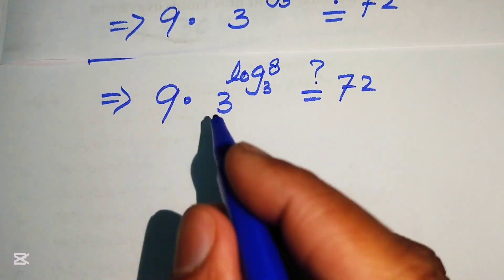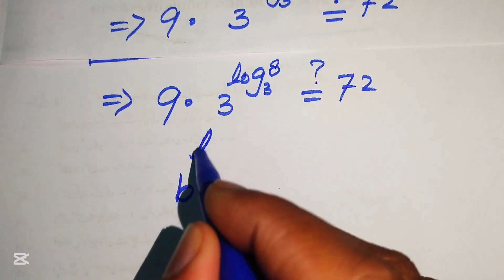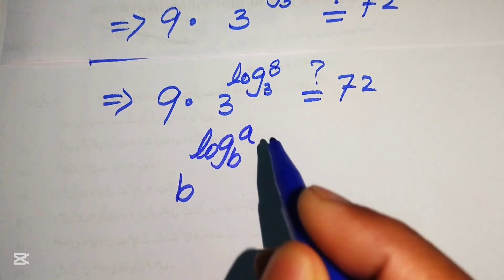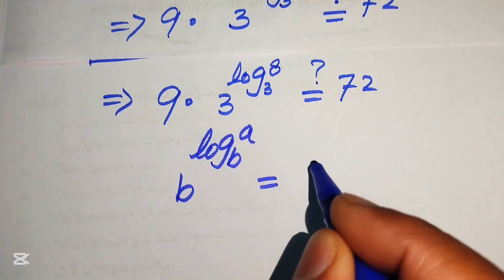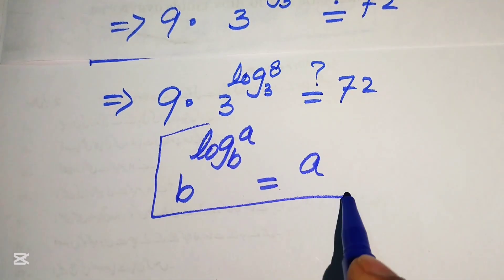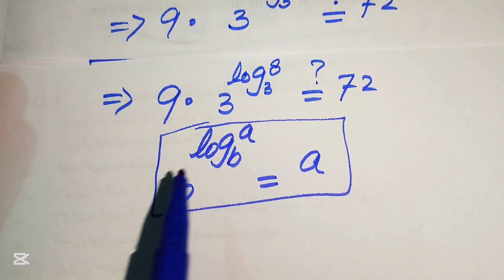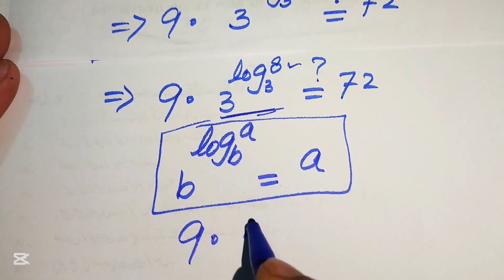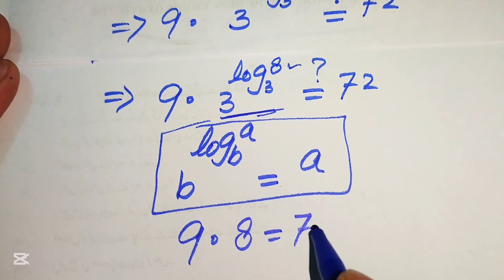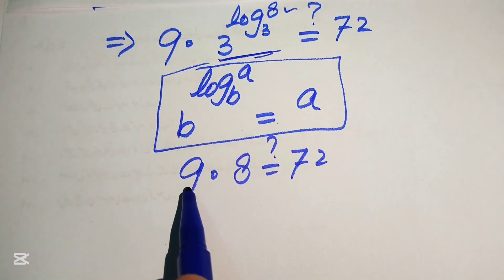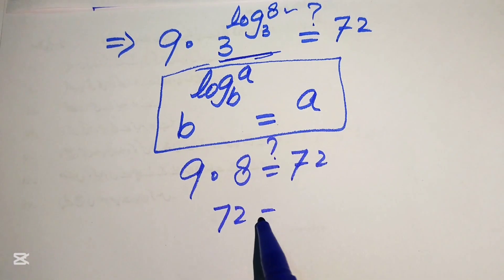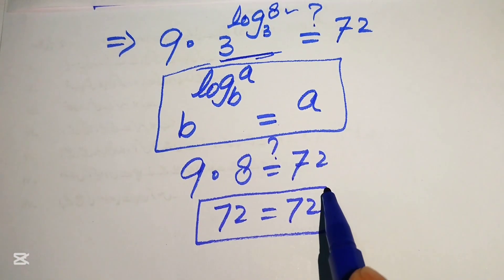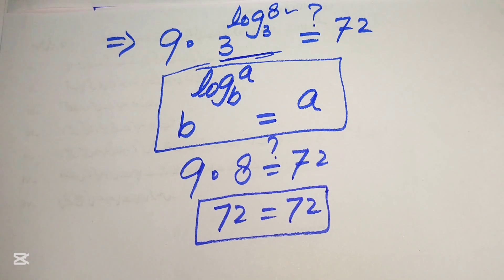Applying the property b^(log_b a) = a, the term 3^(log₃8) equals 8. So we get 9 × 8 = 72, and 72 = 72 confirms the solution. The value of x satisfies the original equation. This is the final answer. Thank you for watching — please subscribe for more videos.